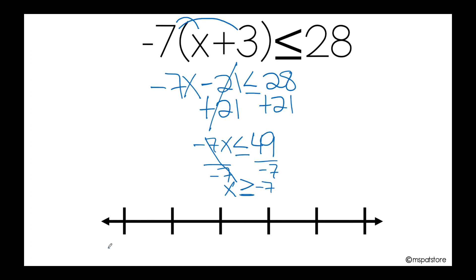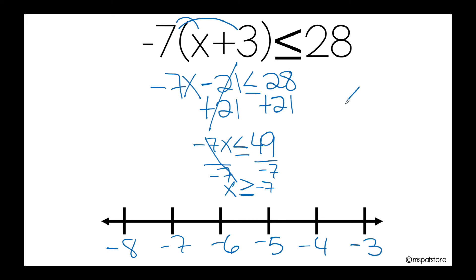So now I'm ready to graph my solution: negative 8, negative 7, negative 6, negative 5, negative 4, and negative 3. As I have less than or equal, I need to use a closed circle — don't forget about that.